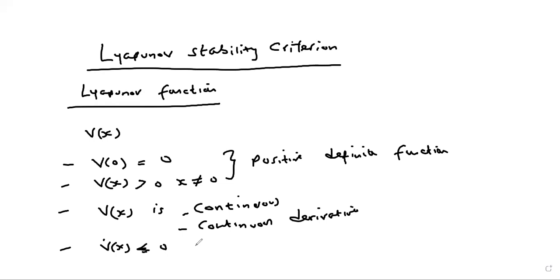However, it is worth noting that the Lyapunov function of any given system is not unique — you can have different Lyapunov functions for the same system. The process of determining a Lyapunov function, especially for a nonlinear system, may be quite difficult. But it does not imply that because it is difficult to find one, a Lyapunov function for that system does not exist.